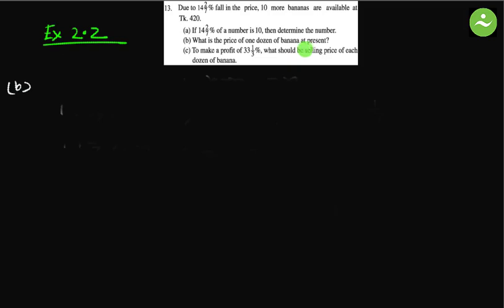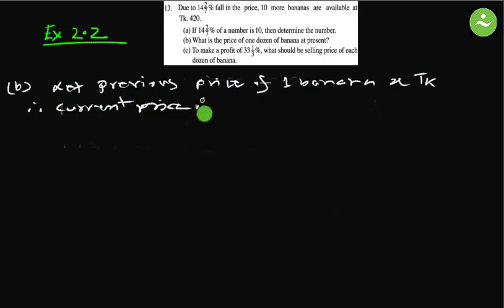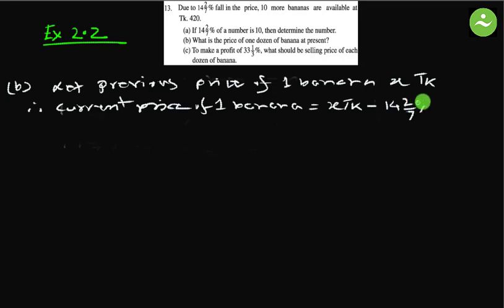Now question (b): what is the price of one dozen bananas at present? The price fell by 14 and 2/7 percent and we need to find the price of one dozen bananas. Let the previous price of one banana be x taka. Because of the 14 and 2/7 percent fall in price, the current price of one banana equals x taka minus 14 and 2/7 percent of x taka.